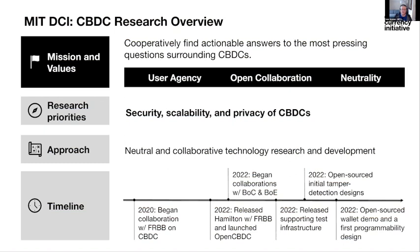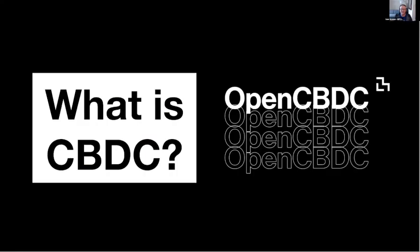Before I get into too much of the meat, it's probably worth taking a moment to ask what is maybe an obvious question: What is CBDC? So traditionally, central bank money has taken two forms. First, in the form of physical currency — namely cash.